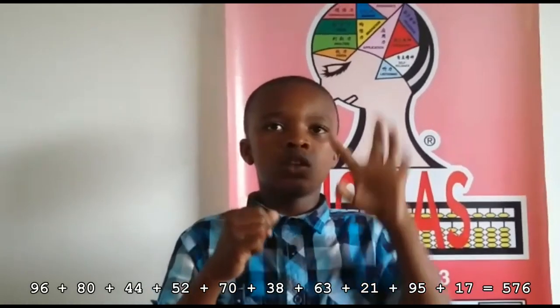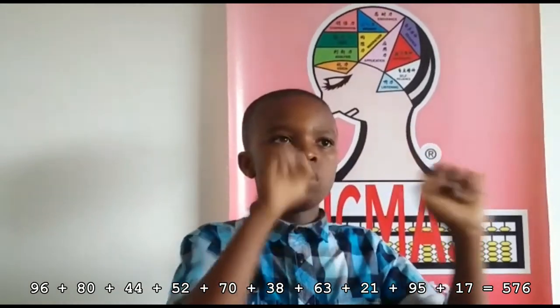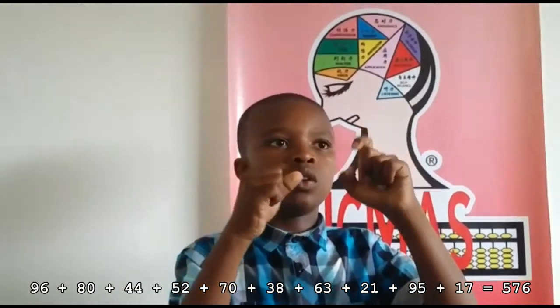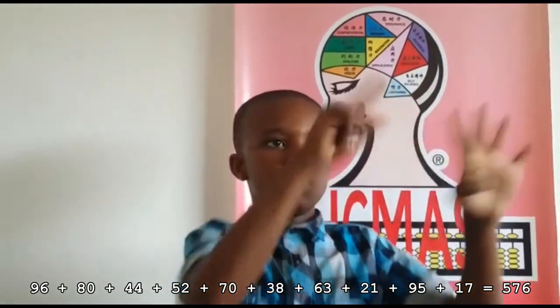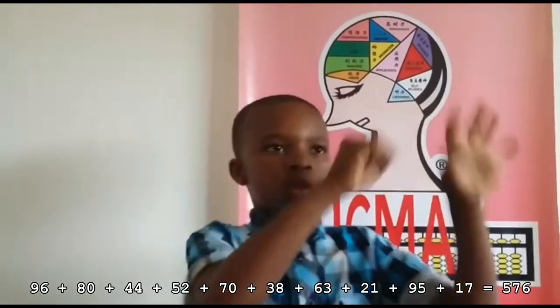Now to these 10 rows, ready. 96 plus 80, 44, 52, 70, 38, 63, 21, 95, 70. That is 576.